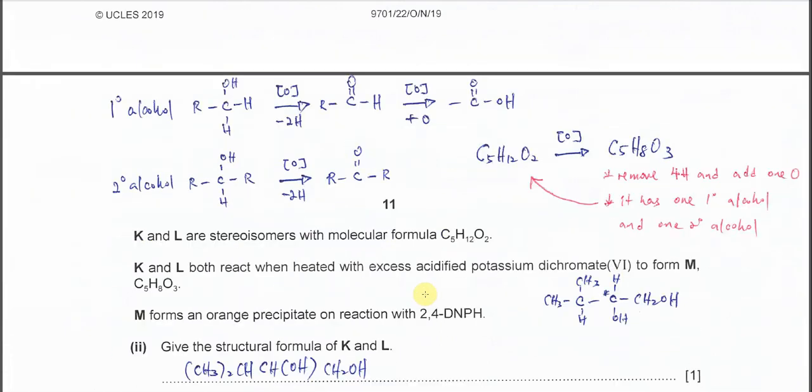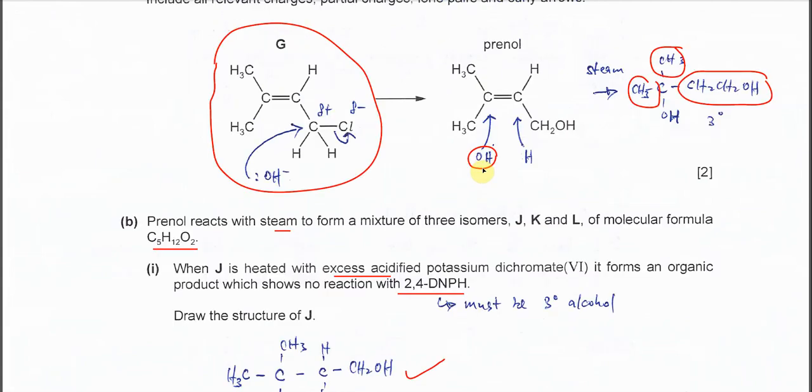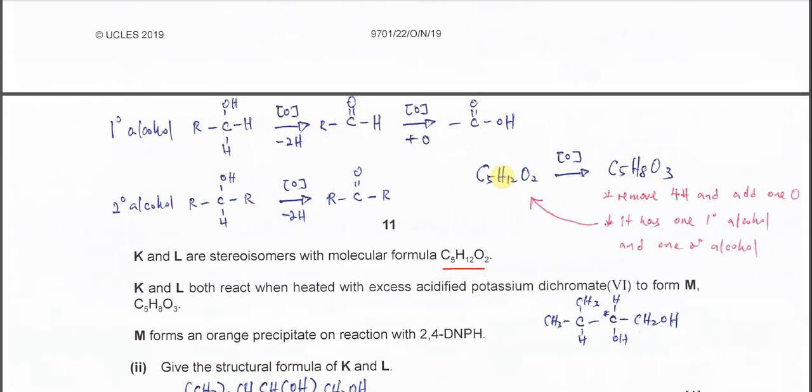And K and L is the isomer of J just now. And the molecular formula is C5H12O2. And K and L both reacts when heated with excess acidified potassium dichromate 6 to form the M. So here we know that the K and L now it can be oxidized. So of course we know that the K and L, it must be different from the J here. Just now the J is OH is from bonding with this carbon and H with this carbon. So means K and L most likely is hydrogen will bond to this carbon. And OH will bond to this carbon. So you will form the K and L isomer.